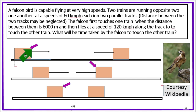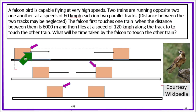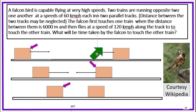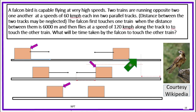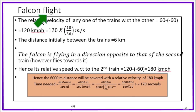Initially, the Falcon bird is in front of the engine of the first train. The trains are moving in opposite directions. What will be the time taken by the Falcon to touch the other train? The relative velocity of either train with respect to the other is 60 minus minus 60, that is 120 km per hour, equal to 120 into 10 by 36 meter per second. In the two opposite directions, the speeds are added.